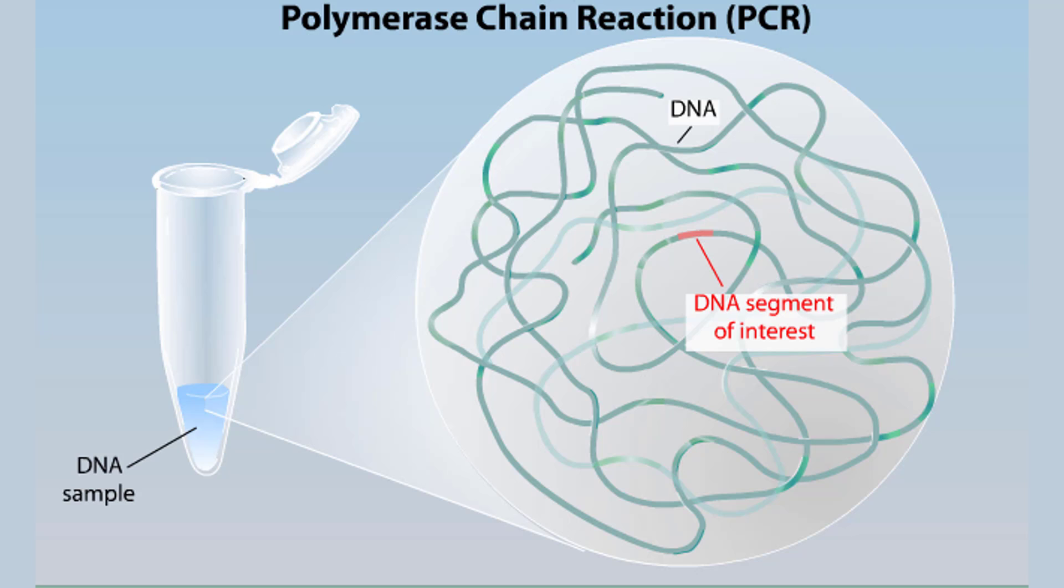A sample of chromosomal DNA, also called genomic DNA, can be used as the starting material for the polymerase chain reaction or PCR.